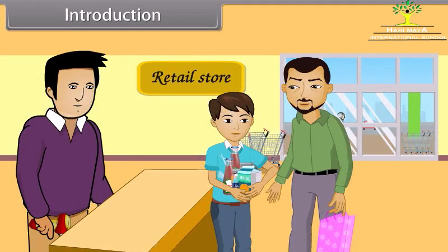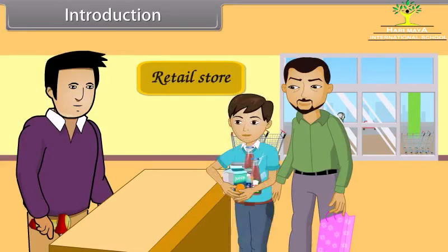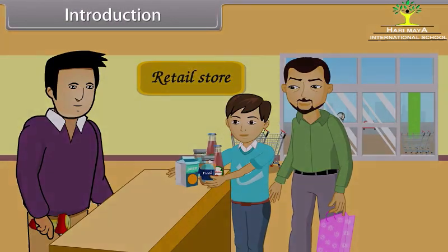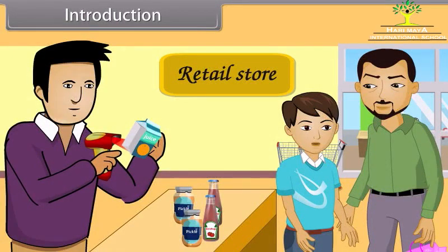Son, put all the items on the counter table for billing. Yes, father. Father, I want to ask you something. Yes, son, you can ask. Father, the shopkeeper is using some light device to access the details of all the goods. What is it and how does it work?